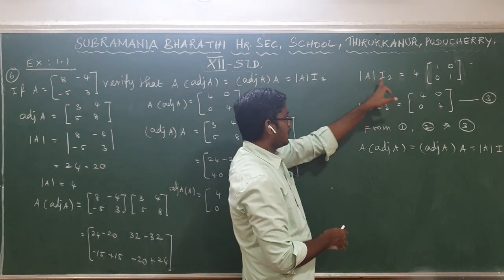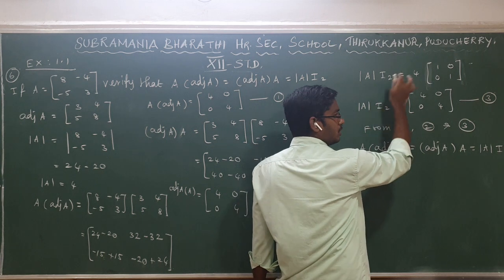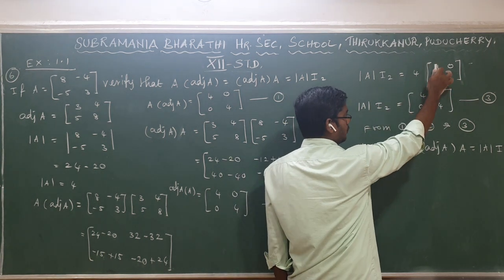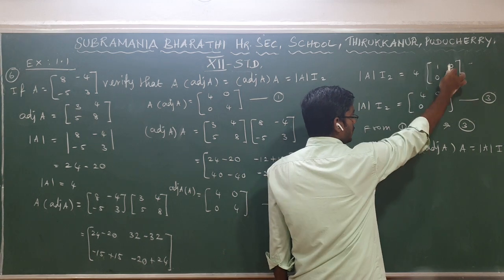Third part: determinant of A times I₂. Determinant of A we already found is 4. I₂ is the identity matrix, 2×2: [1, 0; 0, 1]. Multiply 4 into the identity: 4 times 1 is 4, and the zeros remain.